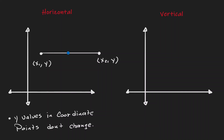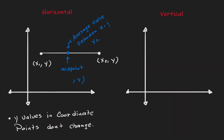Now if we consider the midpoint of this horizontal line, at least we know that the y value is not going to change. But how about the x coordinate? We'll note that the x coordinate will be the mid value between x1 and x2 — or we can call that the average value between x1 and x2. To find the average value, we add x1 and x2 and then divide by 2. So now we have the midpoint of a horizontal line: the y value doesn't change and the x value is the average between the left and the right point.